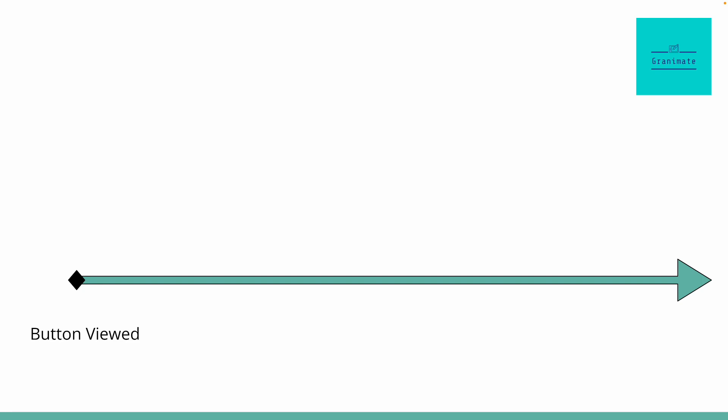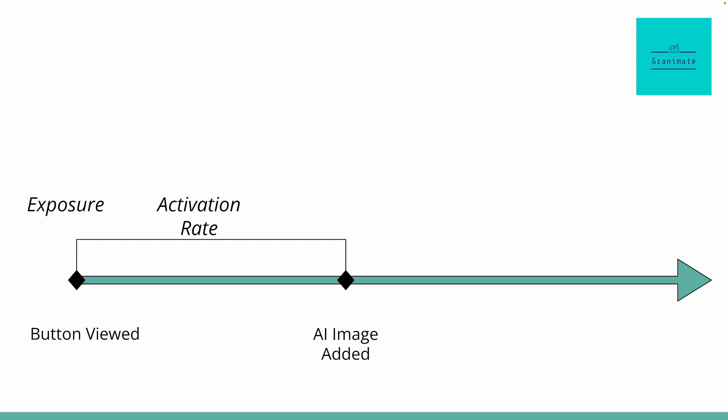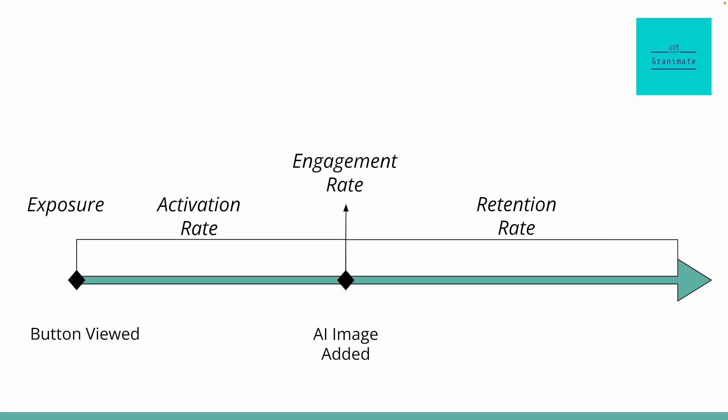Now let's say you add a new feature — an AI image generator that lets users create images and add them to their animation. You want to see how this new feature is performing, so you apply the same method to only this feature. There's a button or pop-up informing the user this tool is an option — that's your exposure point. When a user actually adds an AI-generated image to their animation, that's the key action. So exposure is the number of people who saw the button or pop-up, activation rate is the portion of those exposed who use the tool, engagement rate is the number of images added per person who used the tool, and retention is what percentage of activated users still use this tool 90 or more days later. The focus metric is again weekly active users, where active means anybody who adds an image to their animation.